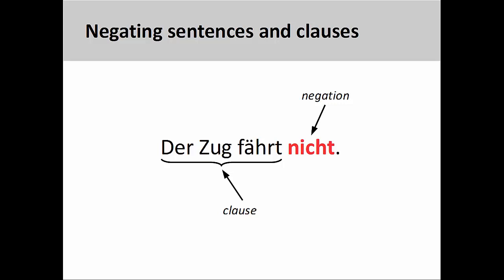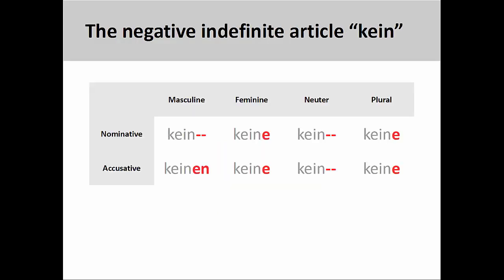We'll negate a more complex clause at the end of this presentation. We use nicht to negate adjectives, adverbs, and clauses. When negating nouns, however, we must use the negative indefinite article kein. You will notice that the declension pattern for kein is exactly the same as for the indefinite article ein. You may want to quickly review the presentation on indefinite articles before proceeding with this one.